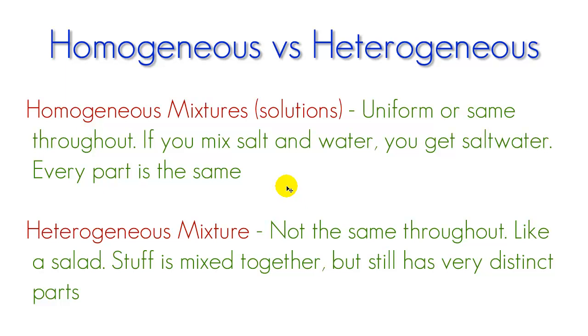So you pretty much have a bunch of crap mixed together but you can still, it still has very distinctive parts. So while homogeneous mixtures are something like Kool-Aid where you put everything together and mix it all up and you can't tell what's what, it all looks uniform and the same.